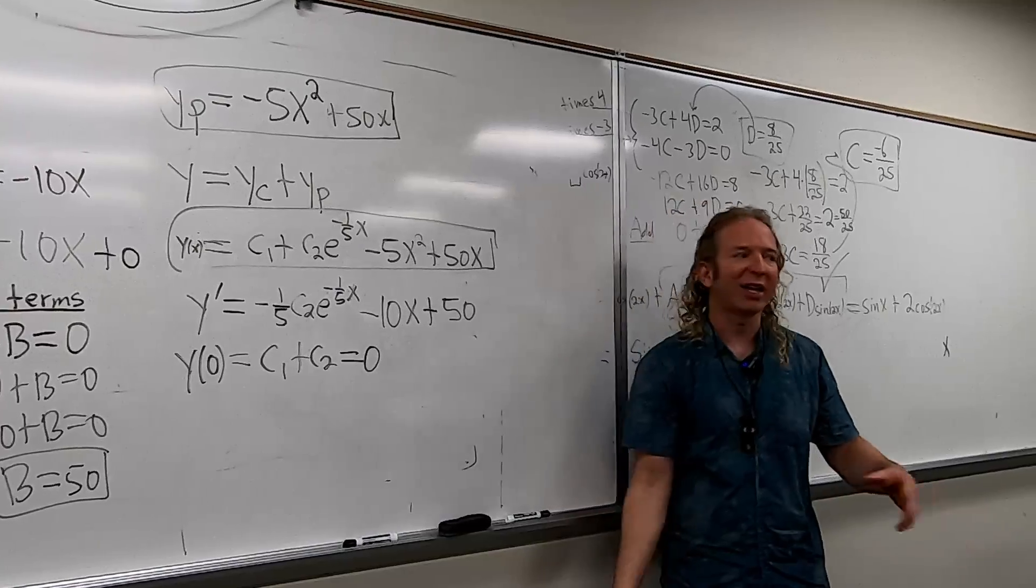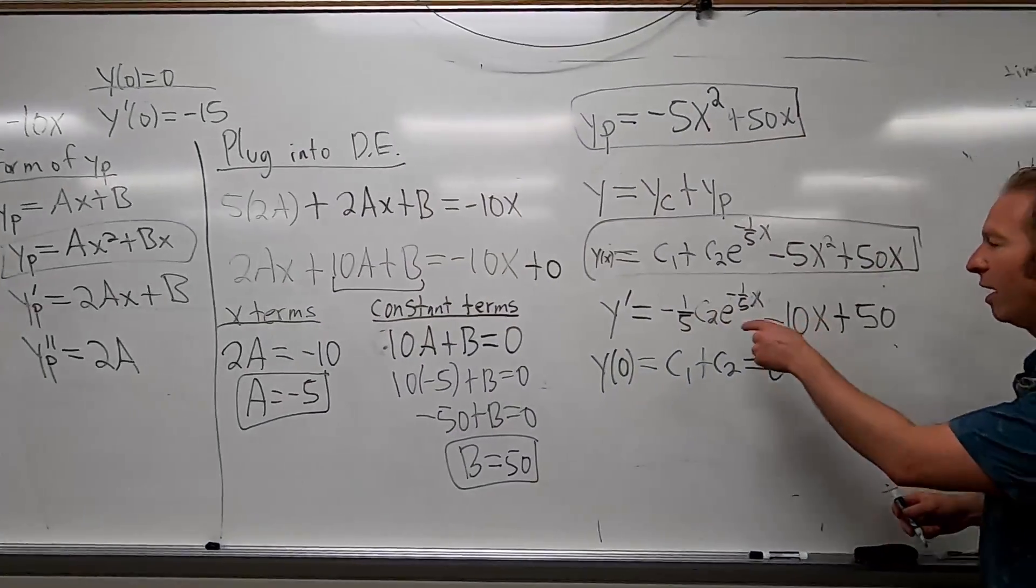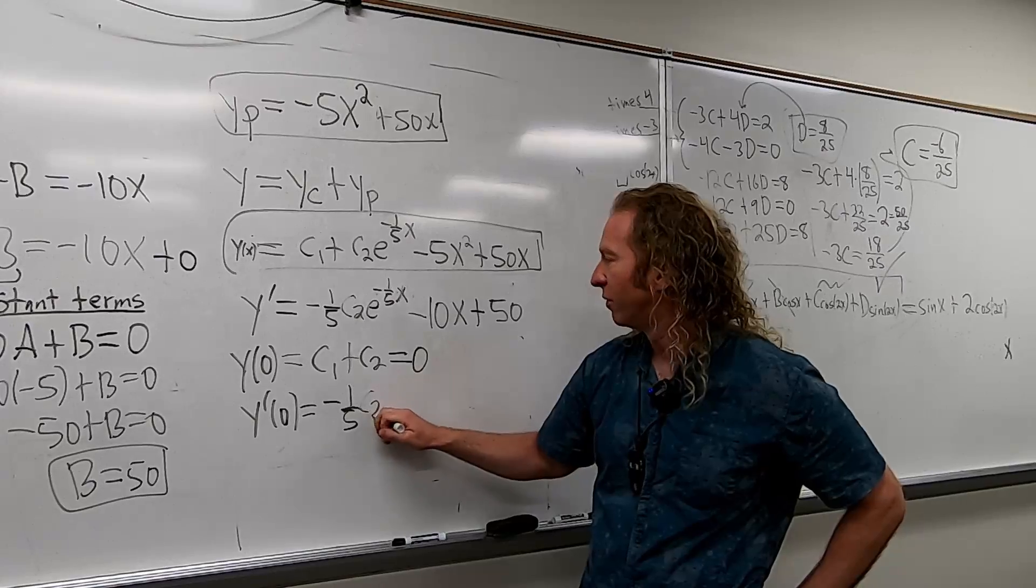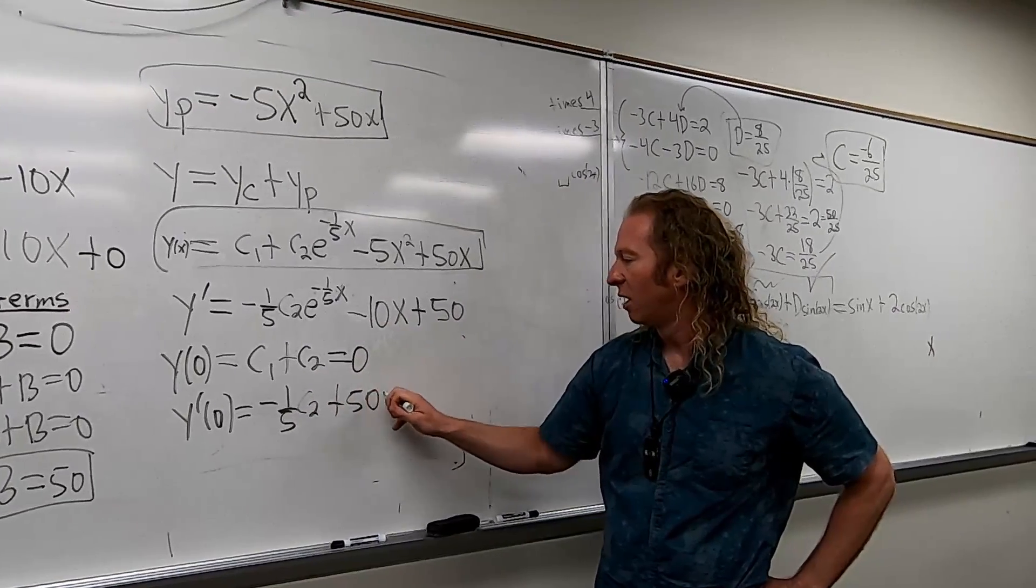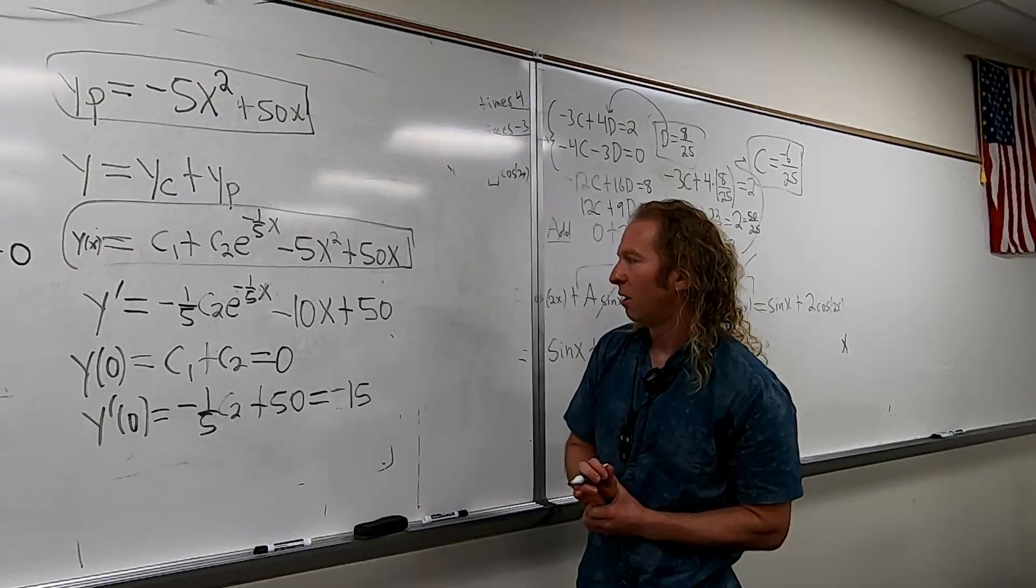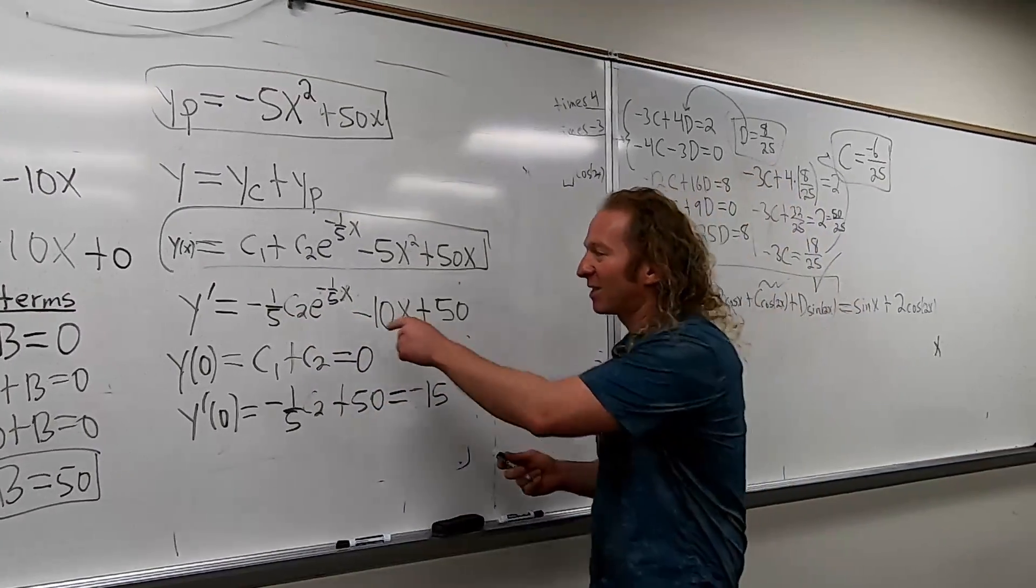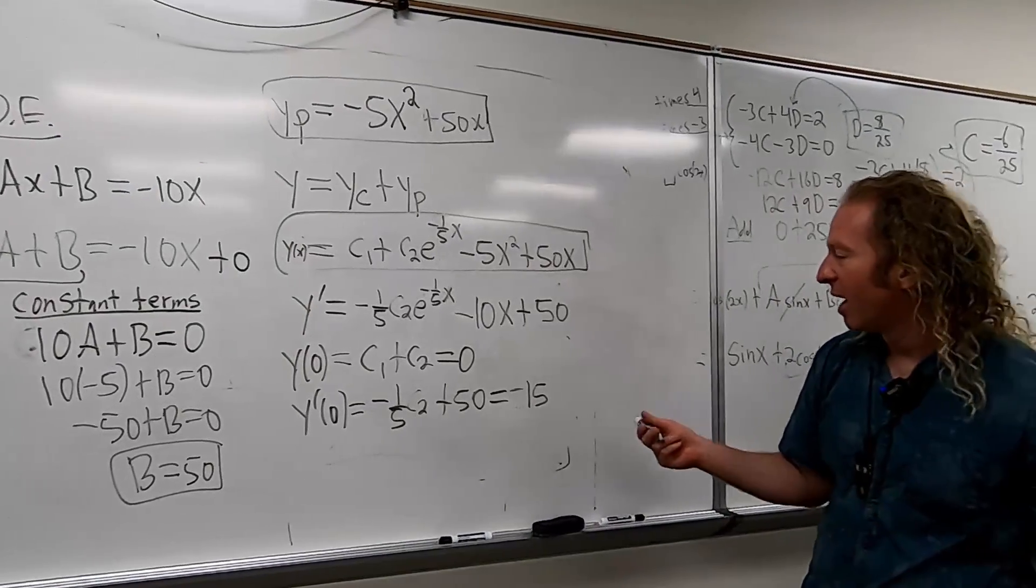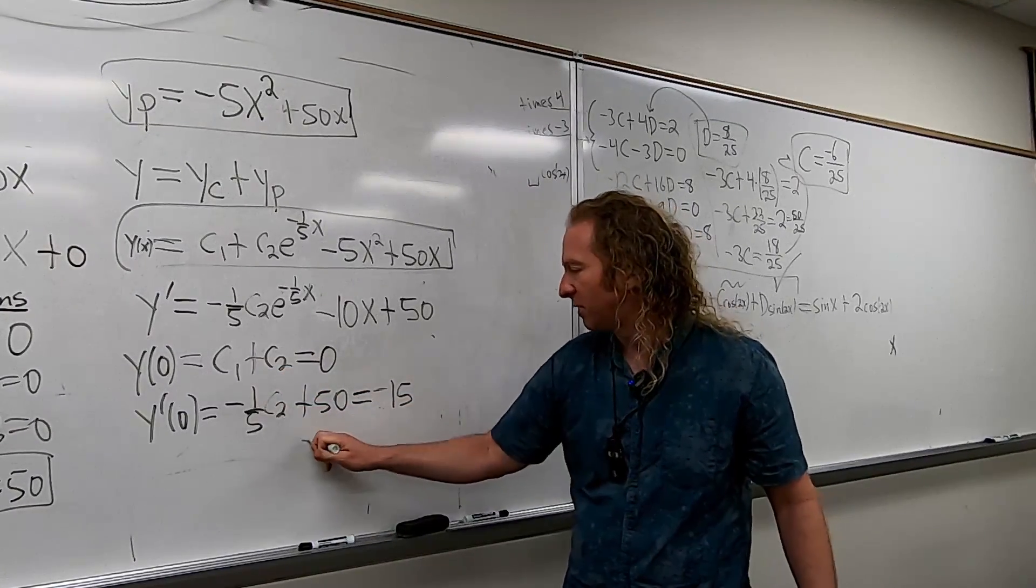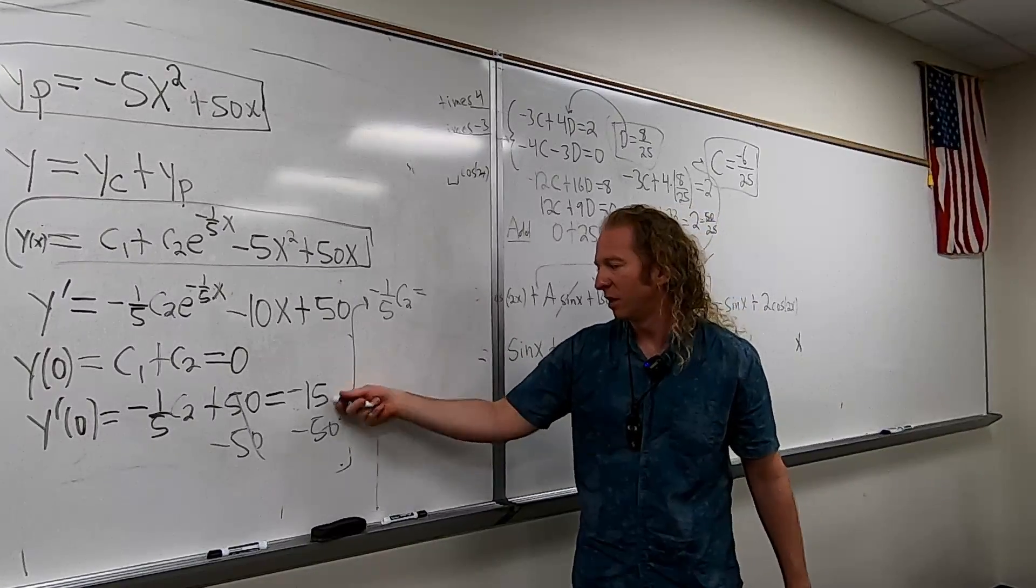So I'm going to leave that. You can solve for one of them and use substitution. I like adding stuff like we did last time. I'm a big fan of that. So let's go to the next one. Y prime of 0 equals negative 15. So now we take the X equals 0 and we plug it into this one. So let's see. So Y prime of 0. So this is E to the 0. So it's 1. So negative 1 fifth C2 minus 0 plus 50. And that's equal to negative 15. So what happened to the C1? There is no C1 in this case. I got confused. Right? It went away. Where would it go? Like, why is it not there? That's because there is no C1 here. Right? So it went away when we took the derivative.